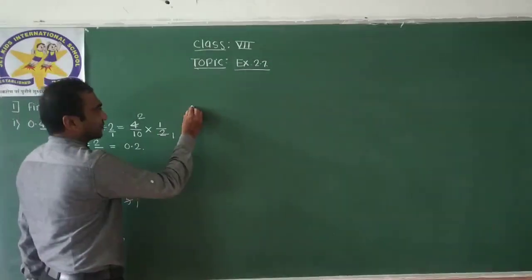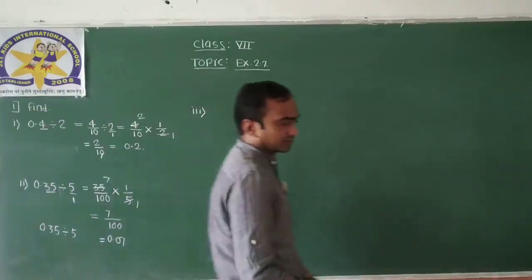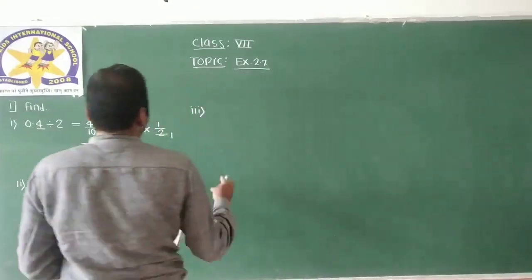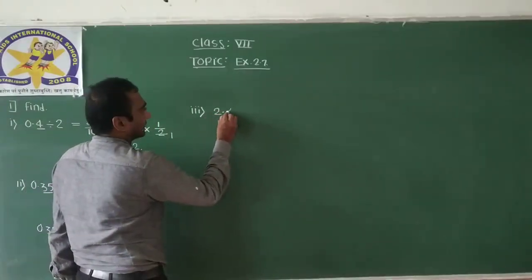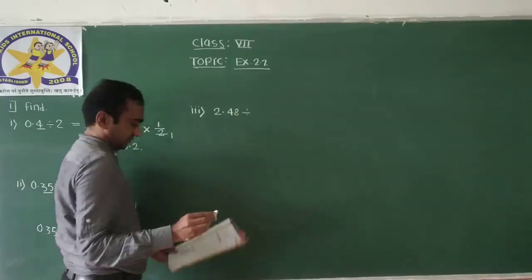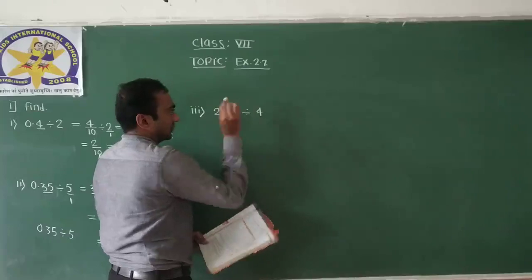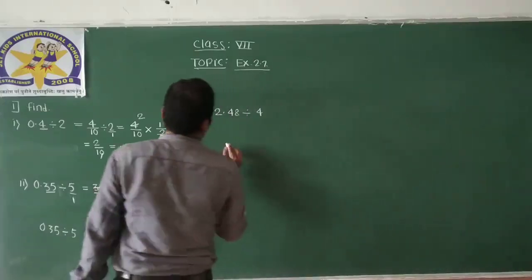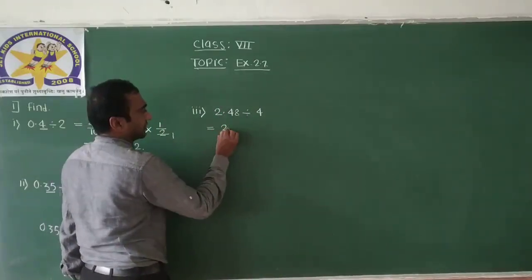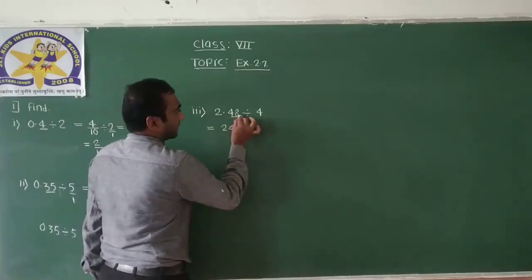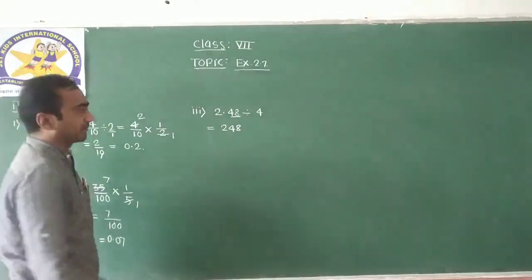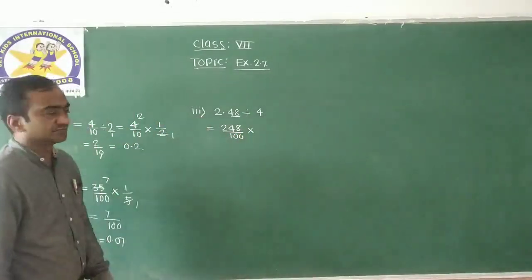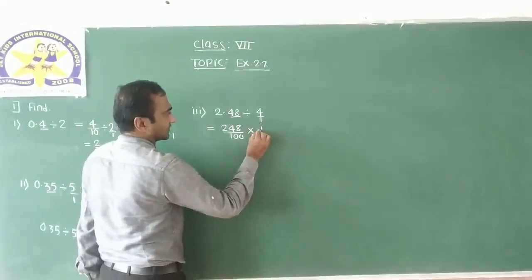After that we have the third question. The third question is 2.48 divided by 4. First of all, write down 2.48. Since there are 2 digits after the decimal point, 2.48 can be written as 248 divided by 100. Convert division into multiplication. The reciprocal of 4 by 1 is 1 by 4.